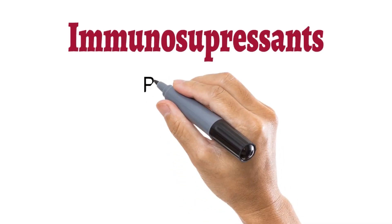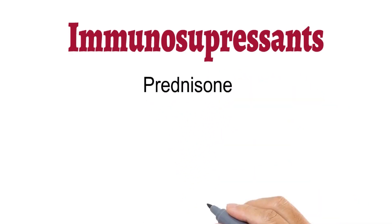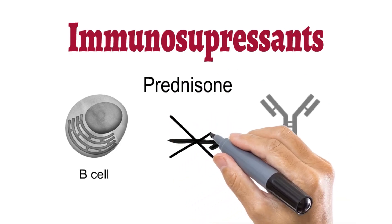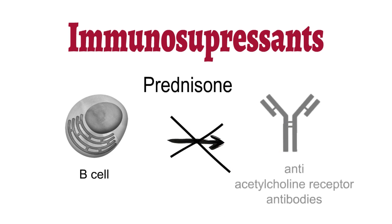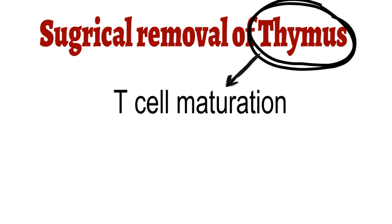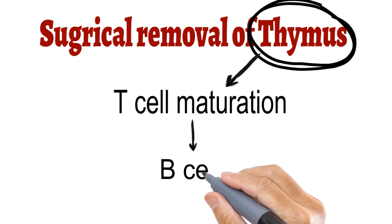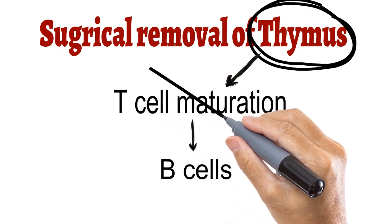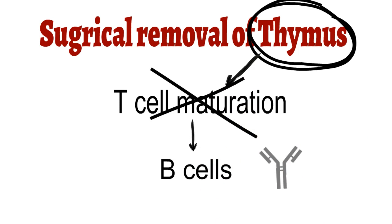The person can also be treated with immunosuppressants like prednisone, which inhibits antibody production by B cells and blocks the basic cause of the disease — that is, anti-acetylcholine receptor antibodies. The third kind of treatment is the surgical removal of the thymus, that is thymectomy. The thymus is the site of T cell maturation, and T cells — especially T helper cells — are required for activation of B cells to produce antibodies. If the thymus is removed, there will be no mature T cells to activate B cells, and therefore antibody production will stop.